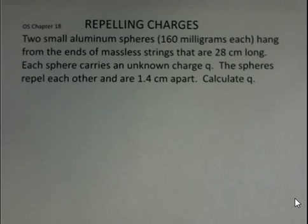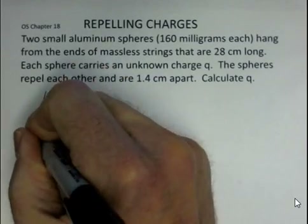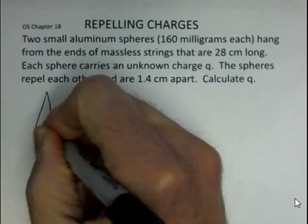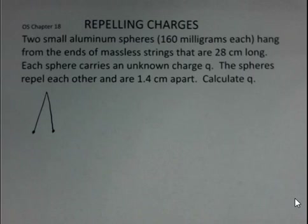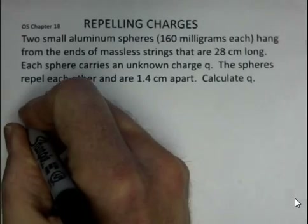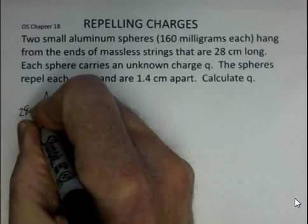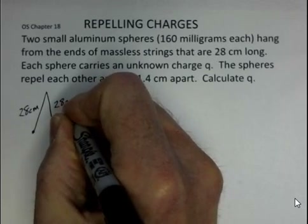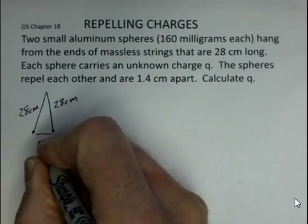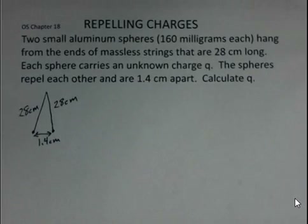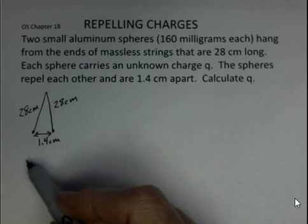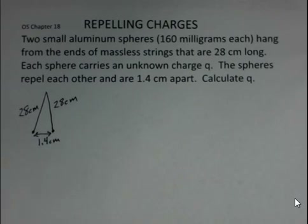So if I make a quick sketch of this, the two strings are at a common point up above and we have 28 centimeters for each string, and we've got 1.4 centimeters between the two objects. There's a weight downward and there's an electrical repelling force since they carry the same sign of charge — they're repelling each other.